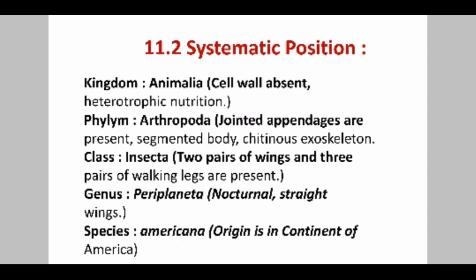Let's see the systematic position or classification of the cockroach. Cockroach belongs to the kingdom Animalia, having phylum Arthropoda. Arthro means jointed and poda means legs — they have jointed appendages. The body is chitinous and segmented. It belongs to the class Insecta, and they possess two pairs of flight appendages (wings) and three pairs of walking legs.